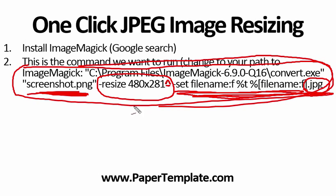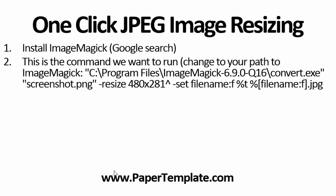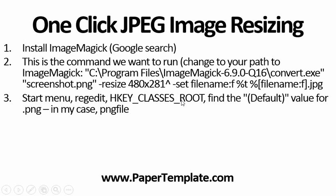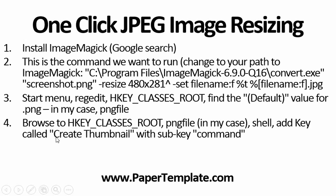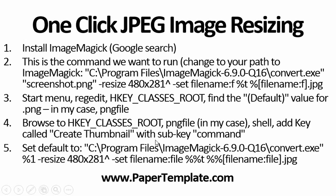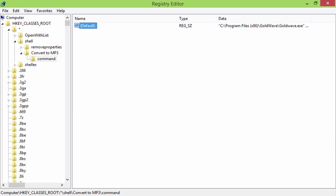So this command will open up any image file — we're giving it a .png — resize it, and save it to .jpg. Once we know that, we add an entry to our Windows registry so that whenever we right-click on a .png file, we can add a right-click entry called 'Create Thumbnail' that will pass in the image we right-clicked, resize it, and save it back.